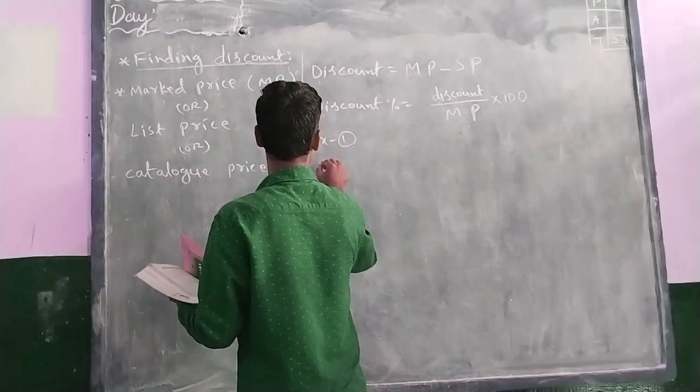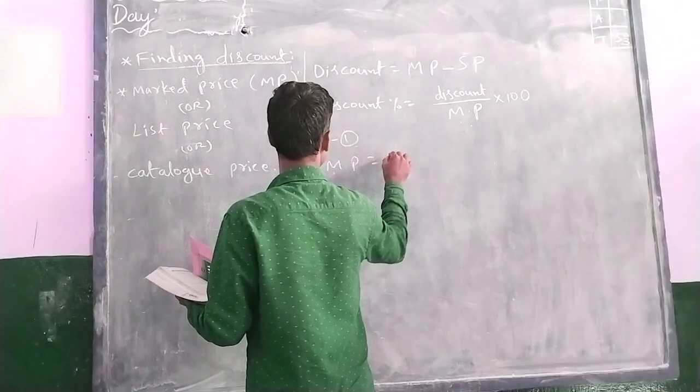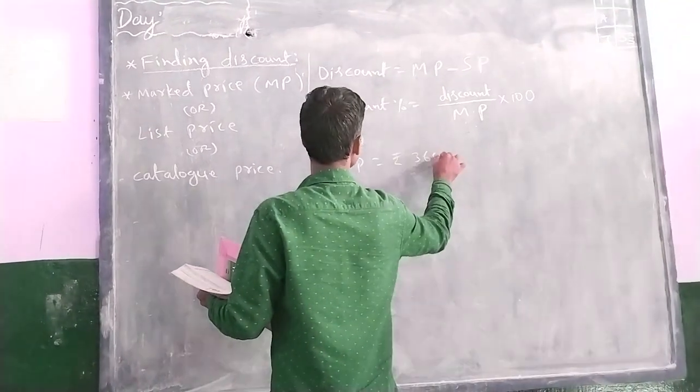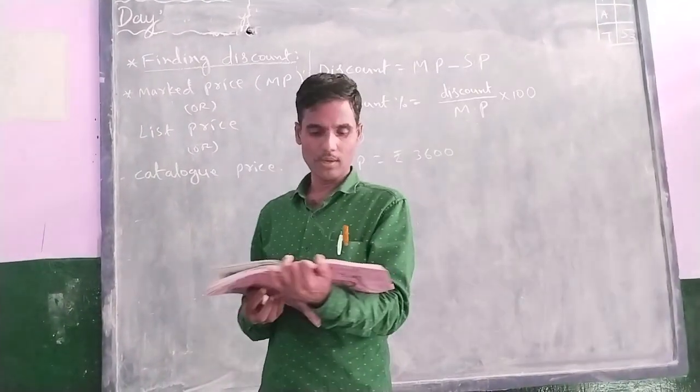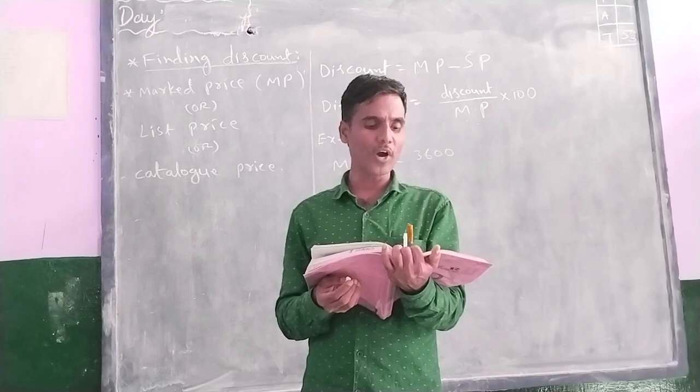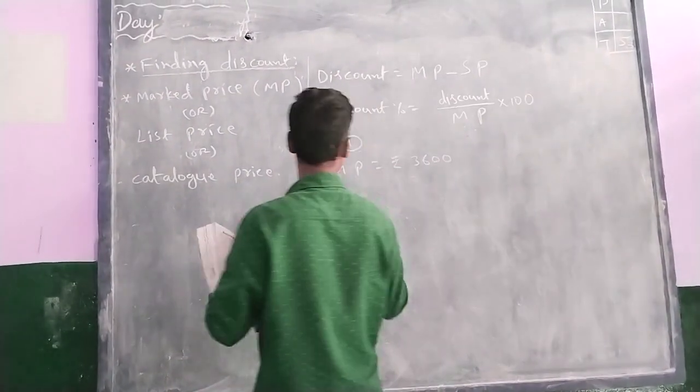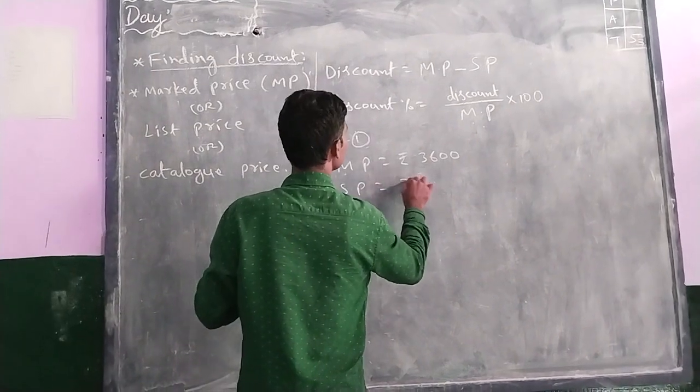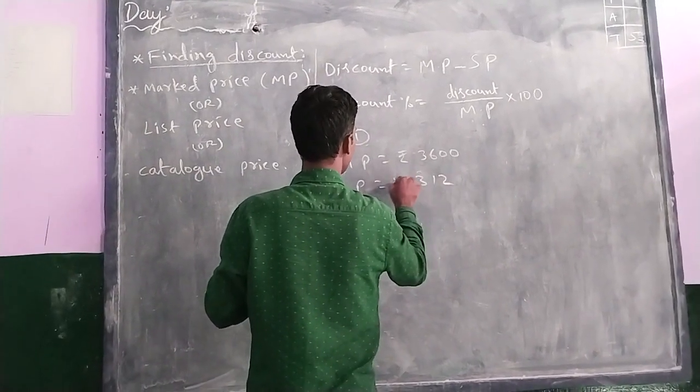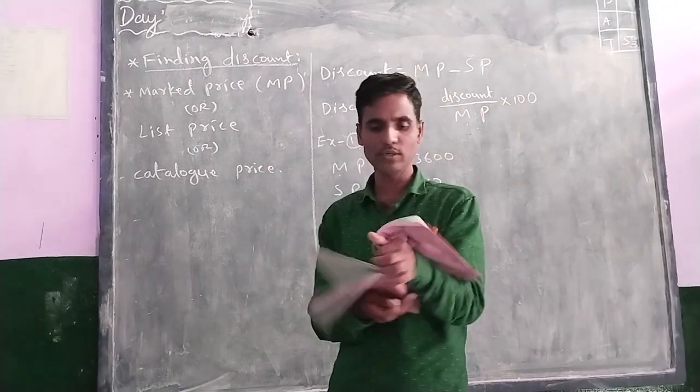So here, marked price equal to Rs. 3600 and sold for Rs. 3312. So means here, selling price equal to Rs. 3312.